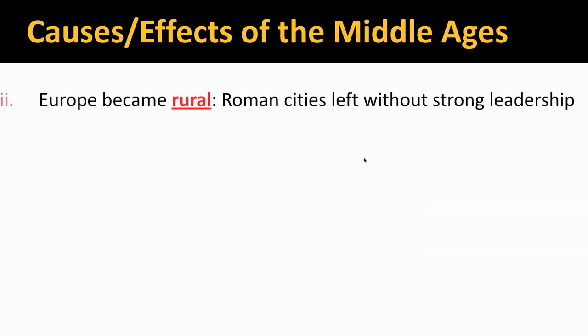Because of that, Europe became rural. A lot of people went out and started little villages in the countryside because those cities weren't safe. Roman cities were left without strong leadership, so people went out into the country.